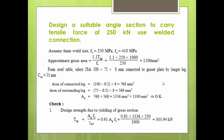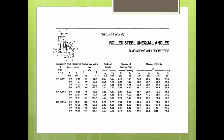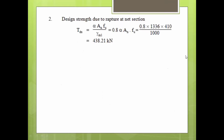For the selected 100×75×8 section, the value of CXX is 31 mm — this comes from the steel table. Looking at the CXX column (center of gravity), this distance is 3.1 cm, or 31 mm in millimeters. This value is required for the welded connection design.